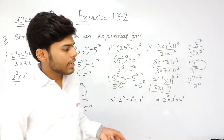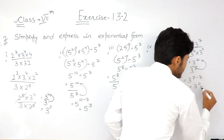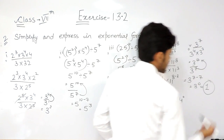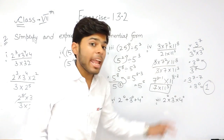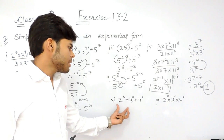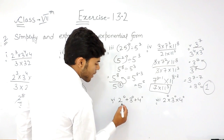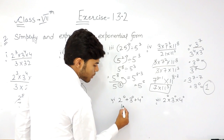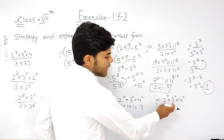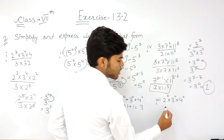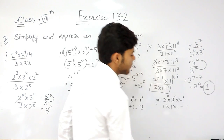Anything raised to the power 0 will give us 1. So when you use this same property — anything to the power 0 is 1 — in part 6 and part 7: for part 6, it is 1 plus 1 plus 1, so our answer will be 3. And anything to the power 0 is 1, so for part 7, it is 1 into 1 into 1, and our answer will be 1.